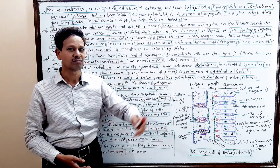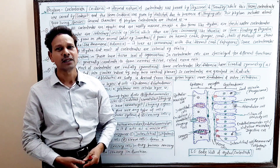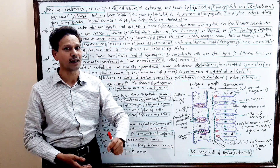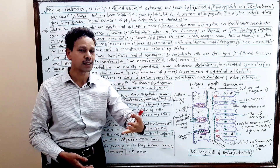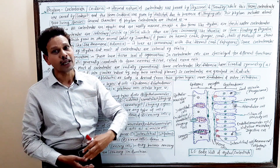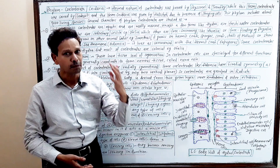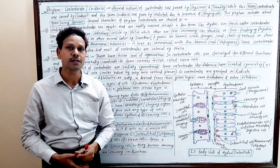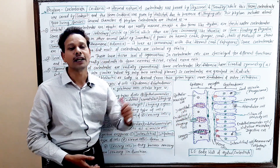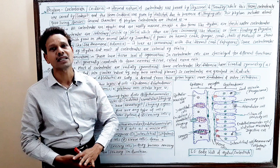Today's lecture is specially designed for all B.Sc. students and all competitive exams. Phylum Coelenterata means the animals with a sac-like body. These are also named Cnidaria because they use special types of cells for defense — cnidoblasts, nematoblasts, and stinging cells.